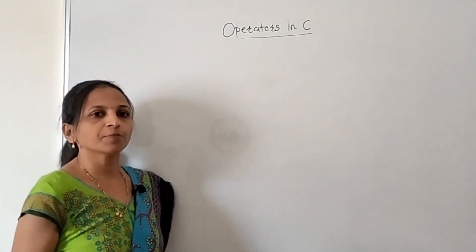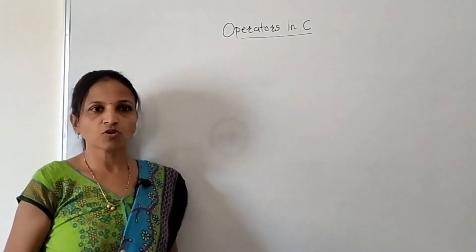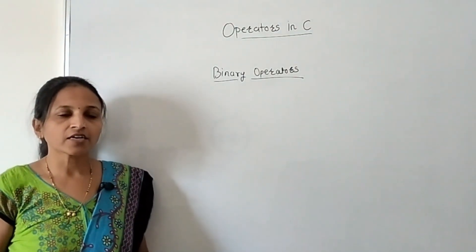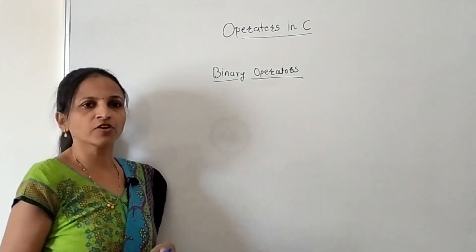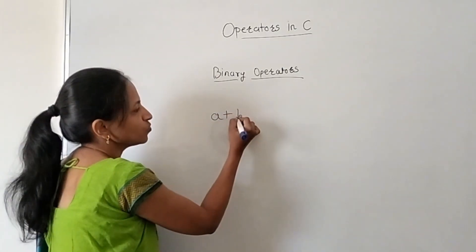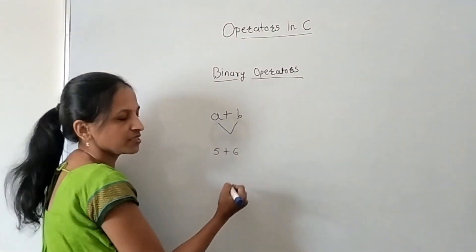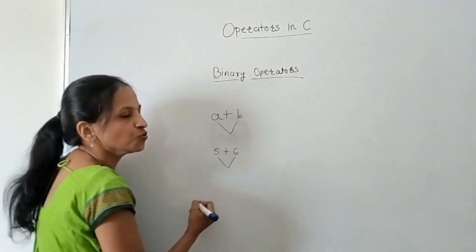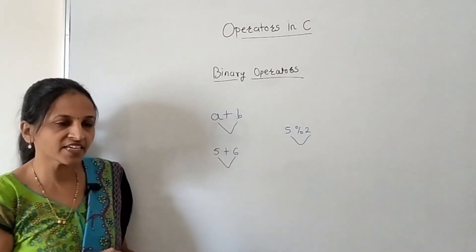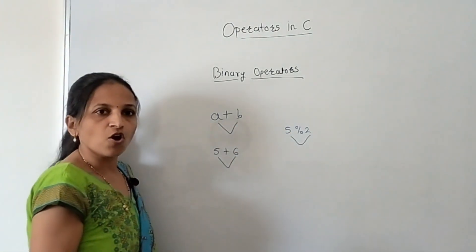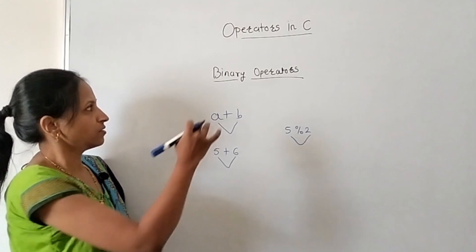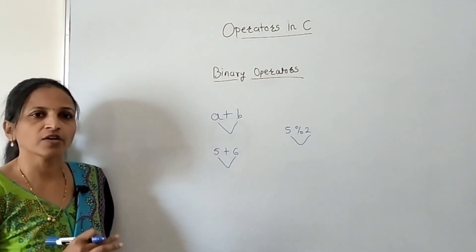Now explaining binary operators in C. Operators which act on two operands are called binary operators. For example, the arithmetic plus operator (+) acts on two operands like 5 + 6. The modulus operator (%) also acts on two operands like 5 % 2. There are multiple types under the binary operator category.